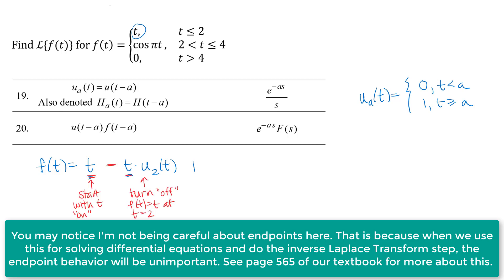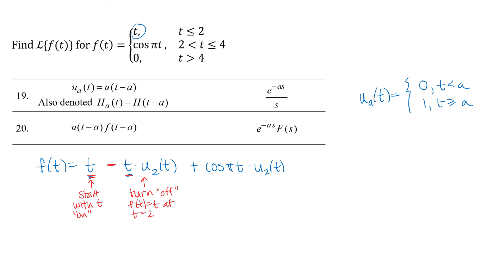At t equals 2, I also want to turn on the cosine pi t function, so I'm going to take that times a unit step function at t equals 2. When t is less than 2, that u sub 2 function will be 0, so that whole term goes away. At t equals 2 and larger, that u sub 2 will be 1, so I'll have t minus t plus cosine pi t — I'll just be left with cosine pi t at t equals 2 and later.